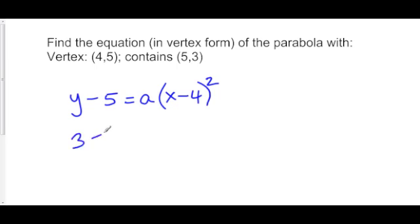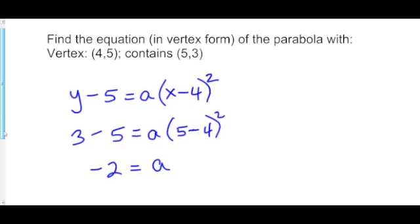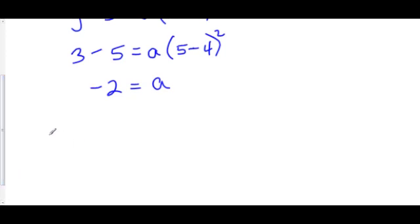So we have 3 minus 5 is equal to a times 5 minus 4 squared. Let's make that a bit nicer. 3 minus 5 that's negative 2. This is equal to 5 minus 4 squared is 1 times a. Well that's just a. Oh so a equals negative 2. So our parabola is y minus 5 equals negative 2 times x minus 4 squared. And that is the answer.